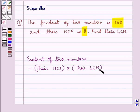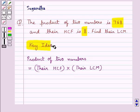That is, the product of the given two numbers is equal to the HCF of the two numbers multiplied by the LCM of the two numbers. This is the key idea that we use for this question.